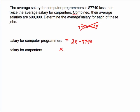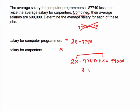Combined — another way of saying their sum — is $99,000, so just add these together. The equation is: 2x minus $7,740 plus x equals $99,000. Combine like terms: 2x plus x is 3x. Add $7,740 to both sides and I get $106,740. Divide both sides by 3 and x is $35,580.